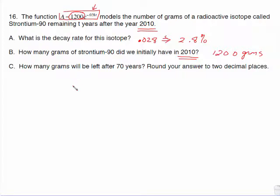And the last will ask us to solve a little bit. How many grams will be left after 70 years? So we have this A equals 1,200 E to the negative 0.028 times 70 and that works out to be 169.03 grams.